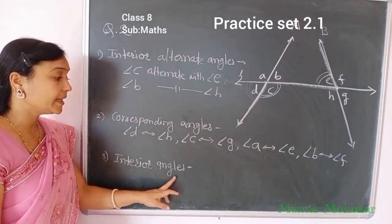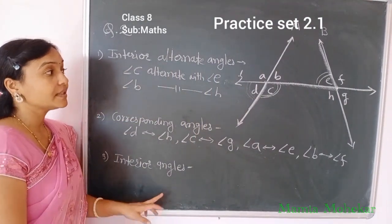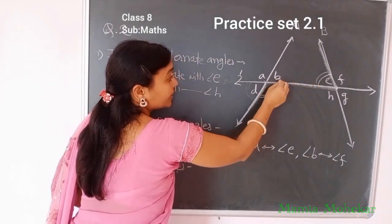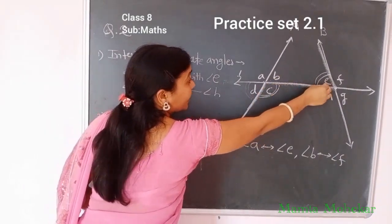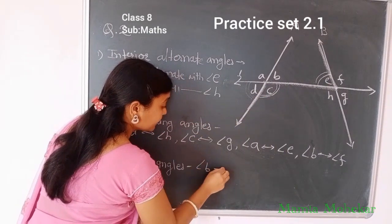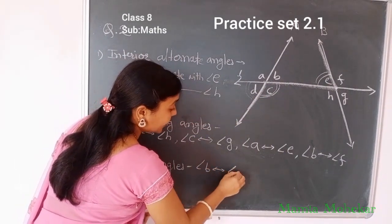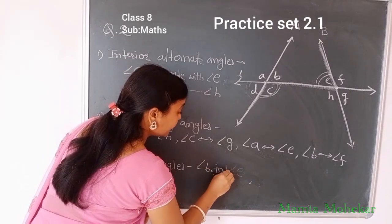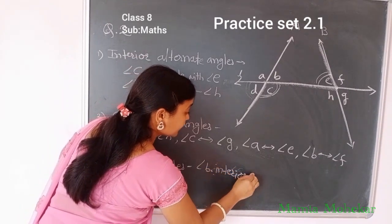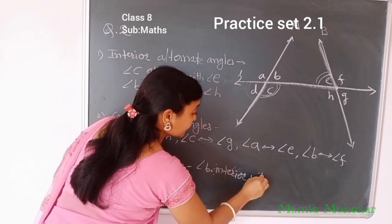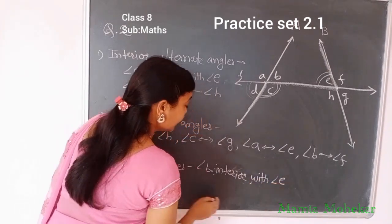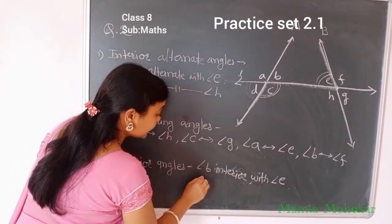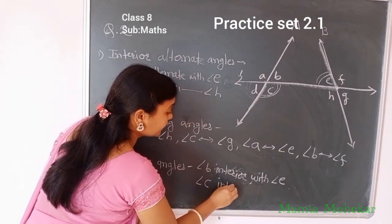Our next question: interior angles. Interior angles means the angles inside the two lines. Angle B with angle E — these are interior angles. Another pair is angle C with angle H. These are the interior angle pairs.